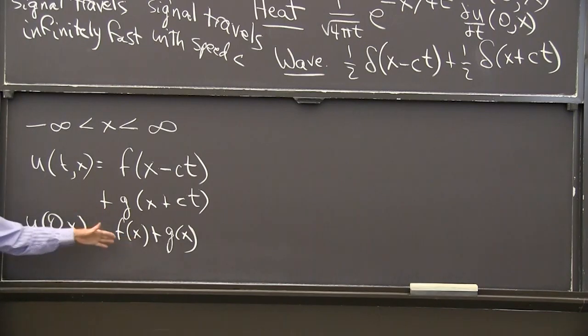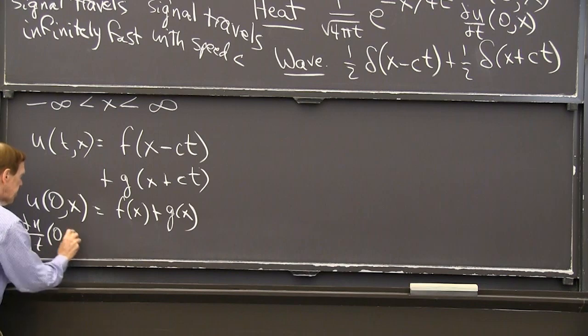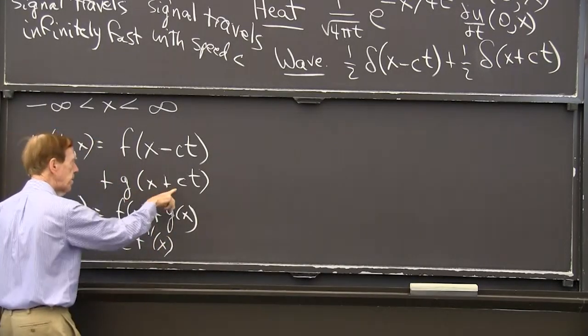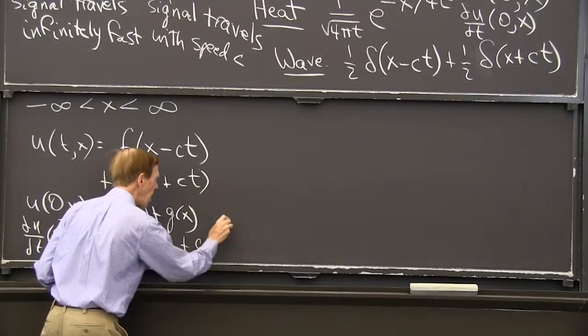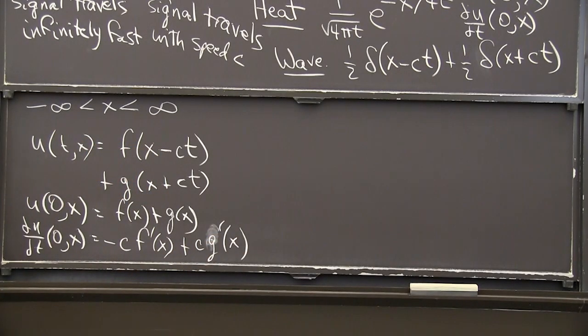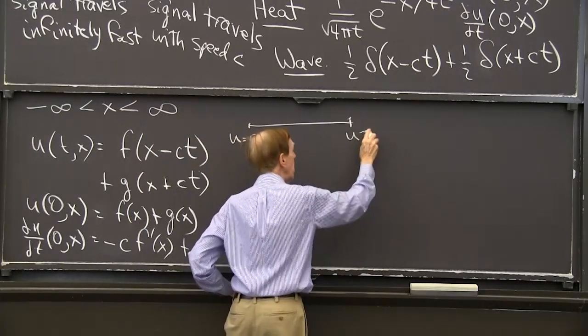At t equals 0, u(0,x) would be f(x) plus g(x). Good. But that's only one condition, and I have f and g to define. So I would also use du/dt at the start. What's the time derivative? It's minus c f'(x) and the time derivative of this will be a plus c g'(x). No big deal. So I'm given two functions. I've got two functions to find in the answer, and I've got two equations. I could solve those for f and g, and it gives a formula called D'Alembert's formula, named after the person who put this together.